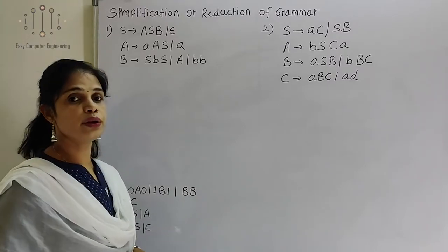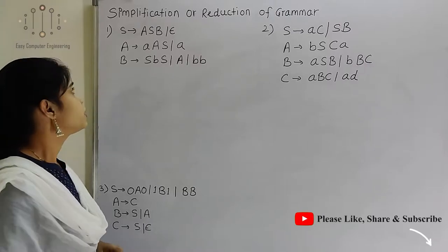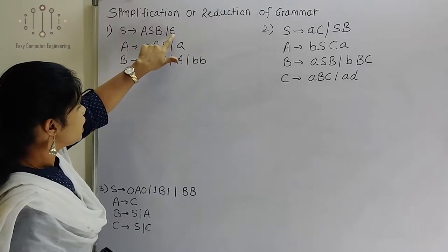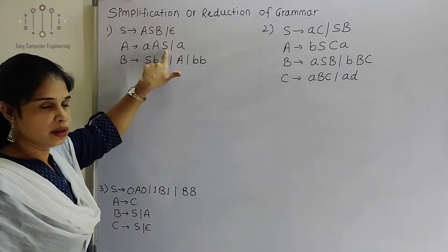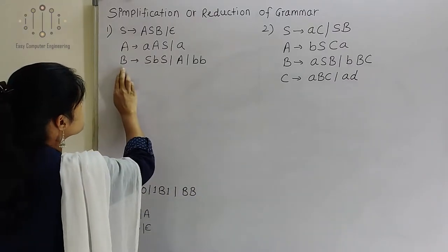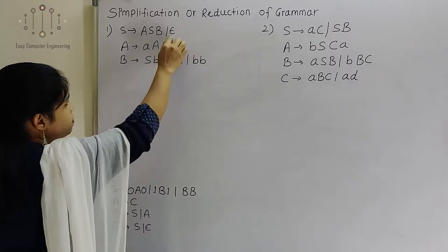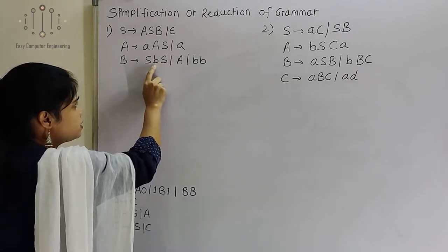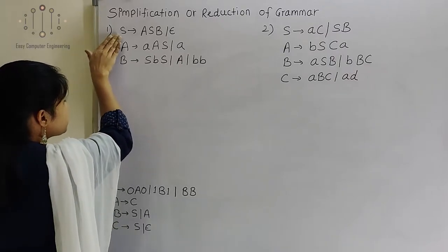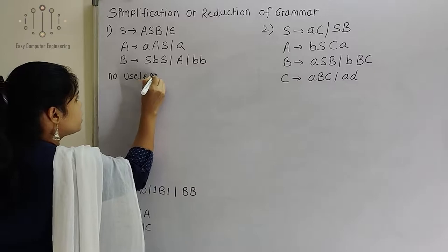Now we will find out which is a non-generating symbol. Non-generating means directly or indirectly, is there any terminal symbol or not. From A, if I put this A and this S as epsilon, this is possible — means A is a generating symbol. For B, B is giving S and A. A is giving this production, and S is producing epsilon, so we can put epsilon. So B produces a terminal, and A as well. Both A and B are generating symbols, same for S. So in this example there is no useless symbol.